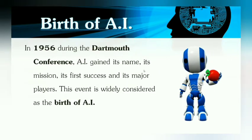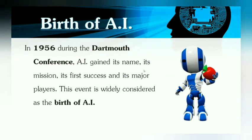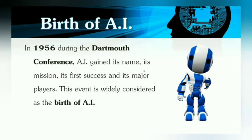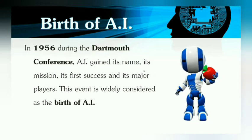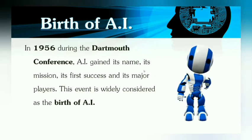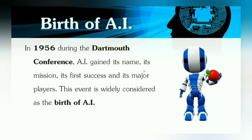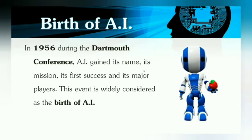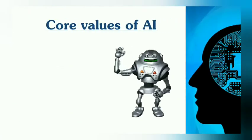What is the story behind the birth of AI? In 1956, a Dartmouth conference was held. Here, AI gained its name, its mission, its first success and its major players, that is, machine learning and robotics. This event is widely considered as the birth of AI.